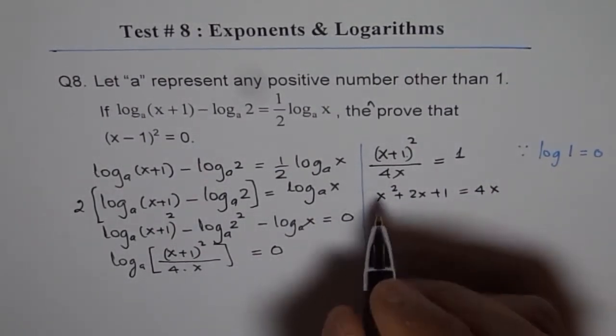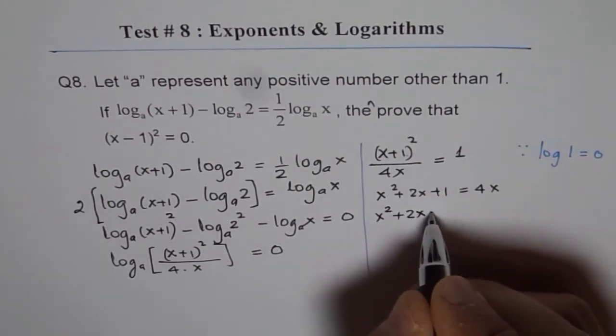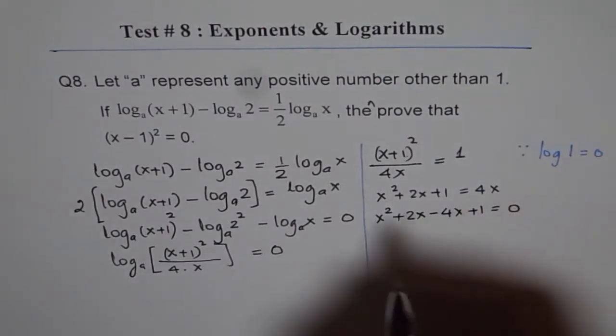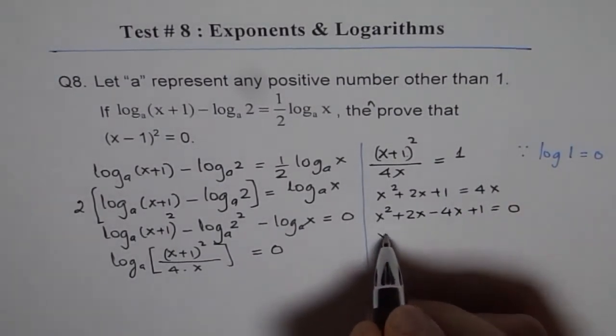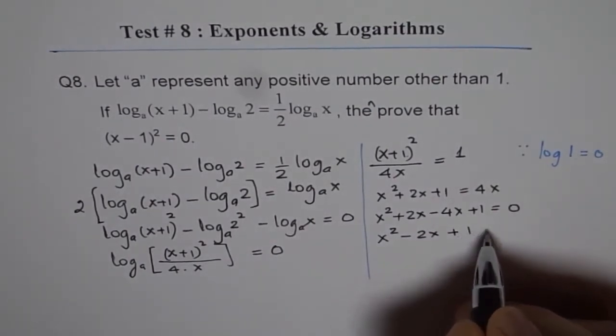Let me bring 4x together to the left side. x squared plus 2x minus 4x plus 1 equals 0. We'll combine these terms and we get x squared minus 2x plus 1 equals 0.